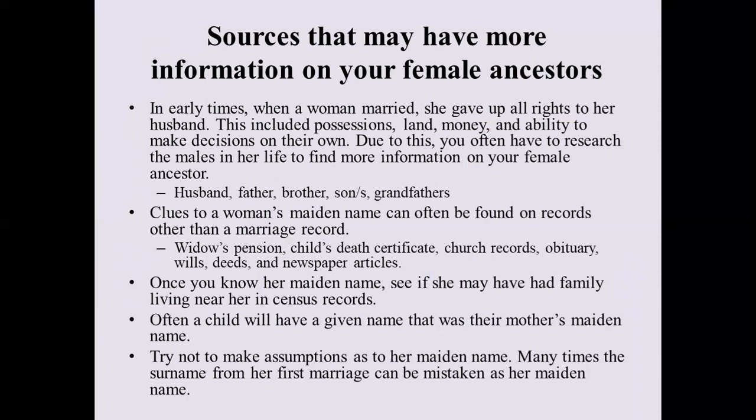You can often find men who wrote wills and left things to their grandchildren, usually listing the names. Clues to a woman's maiden name can often be found on records other than a marriage record. A widow's pension will often list her maiden name and when and where she married. A child's death certificate will often list the mother with her maiden name if it was known. Church records are always worth looking through. An obituary might mention her parents. Wills and deed records from a parent or even a brother are often a good indicator — they would often say 'to their beloved daughter' or 'beloved sister.'